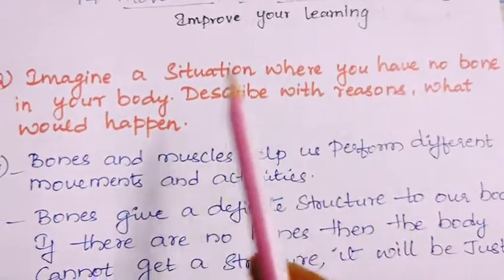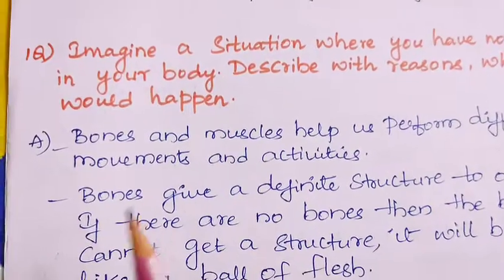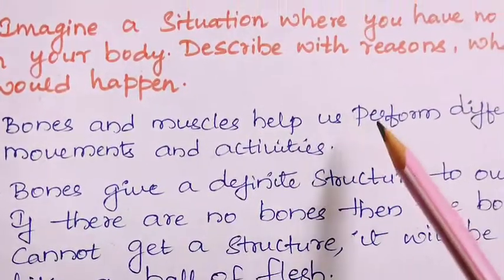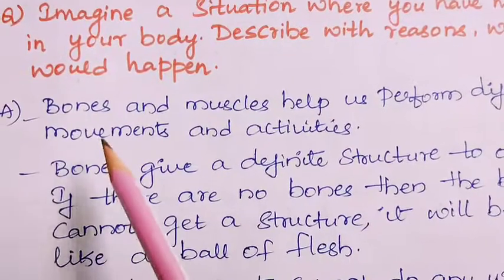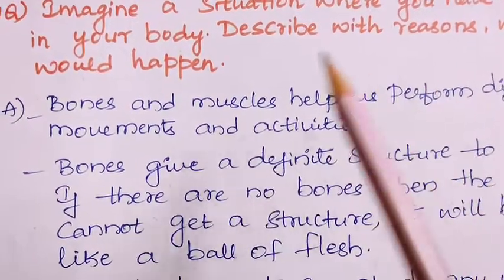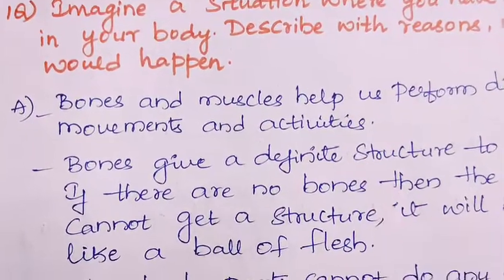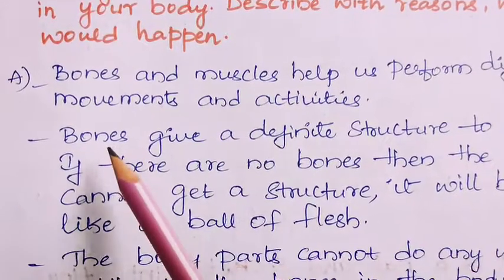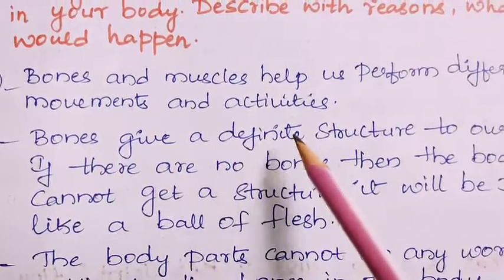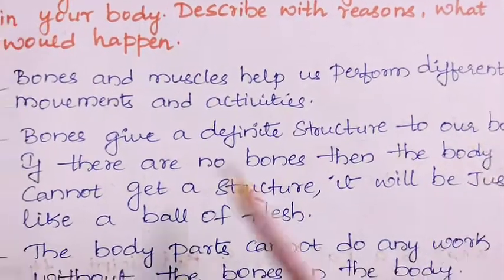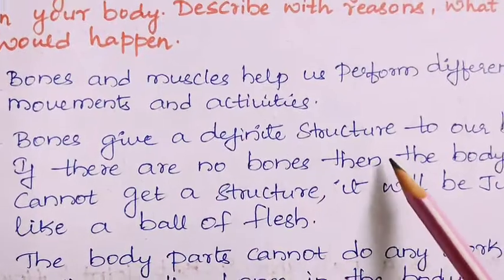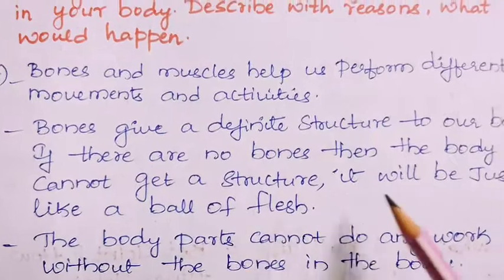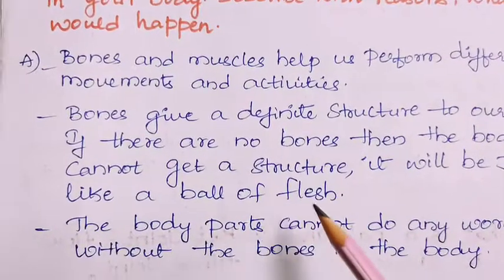If we don't have bones in our body, what is going to happen? Bones and muscles help us perform different movements and activities. Whatever movement or activities we want to do can be done when we have bones and muscles. Bones give a definite structure to our body. If there are no bones, the body cannot get a structure — it will be just like a ball of flesh.